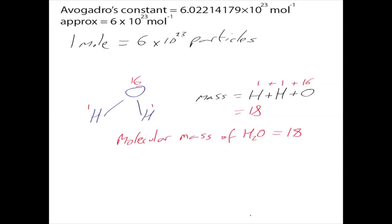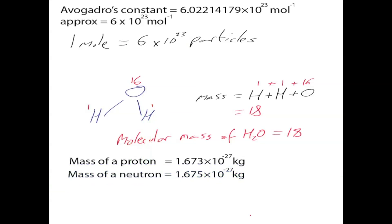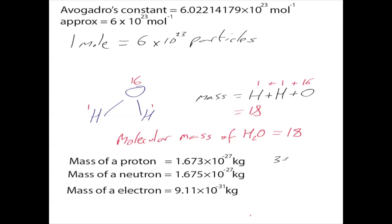The mass of a proton, neutron, and electron are incredibly small. For hydrogen alone, the mass is approximately 3.2 times 10 to the minus 27 kilograms — that's 27 zeros before you get to the 3.2. It's an incredibly small value that you can't possibly weigh out directly.